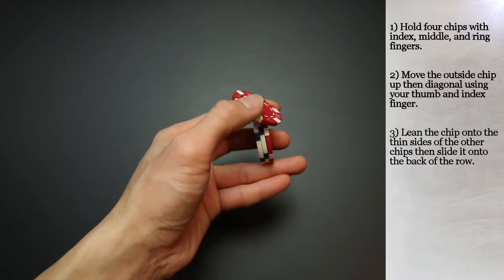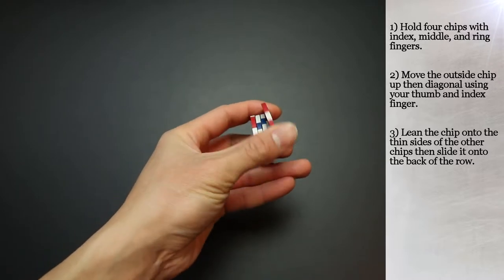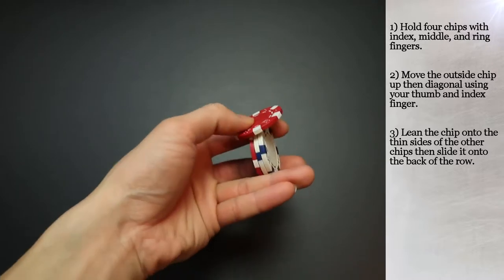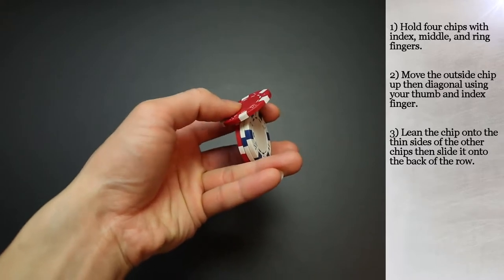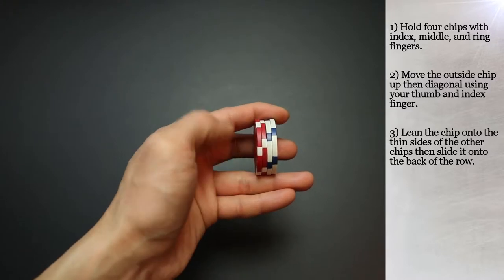Next you'll slide the chip onto the back of the roll. Your way to practice is getting the chip high enough and then pulling it down to lean it against the thin ends of the other chips before sliding it in line onto the back of the roll.